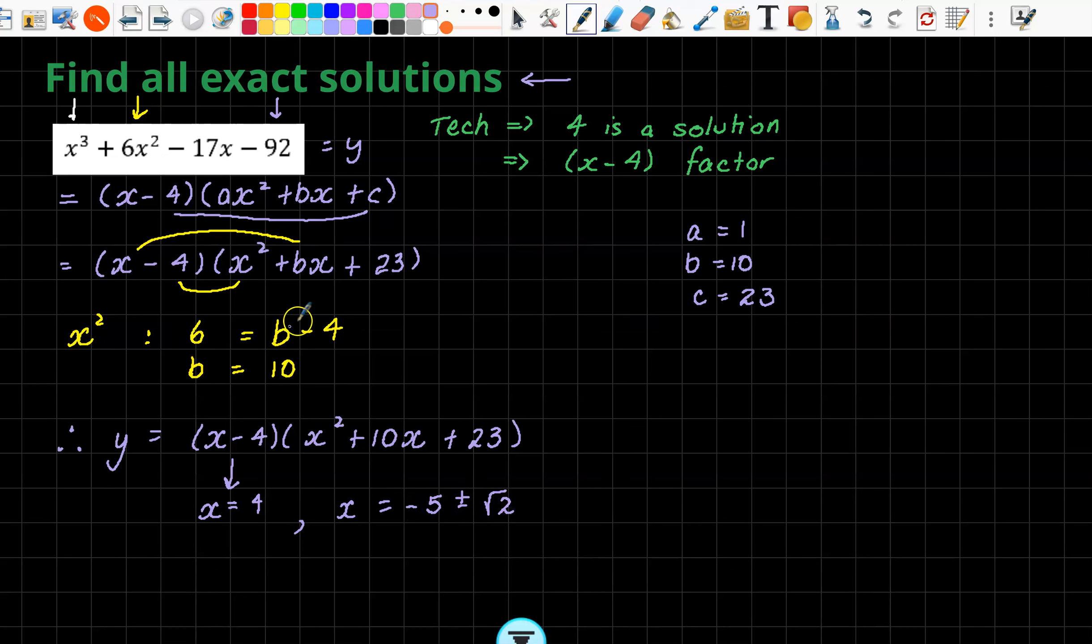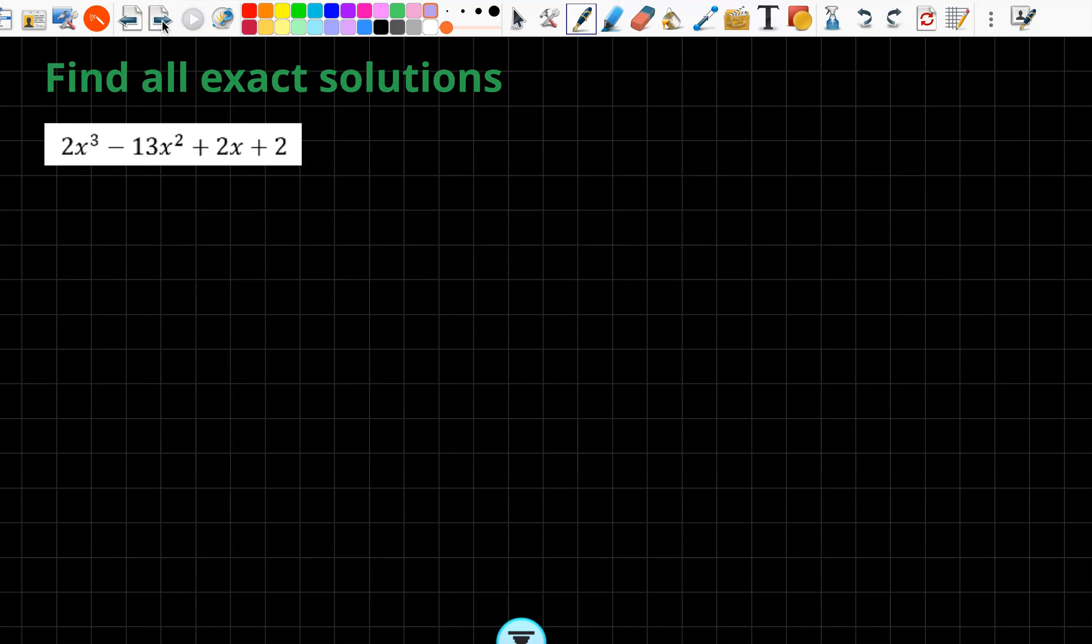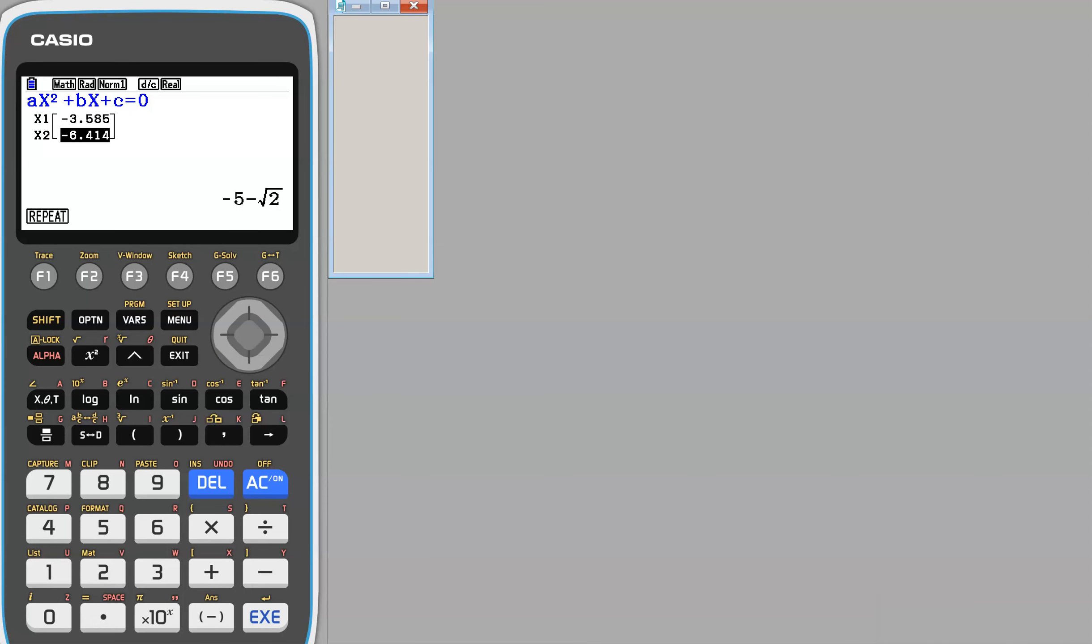So our three solutions are x equals 4 and x equals minus 5 plus or minus root 2. So it's just building upon, we had those skills to find the A, B, C. And now we have to take it one more step to find all the exact solutions, and we're making sure we use technology. So let's go with our next one.